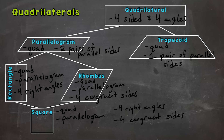The best name for a quadrilateral that meets all of those characteristics is square. Is a square a quadrilateral? Yes — four sides, four angles. Is it a parallelogram? Yes — two pairs of parallel sides. Is it a rectangle? Yes — four right angles. Is it a rhombus? Yes — four congruent sides. But the best name for it is square.